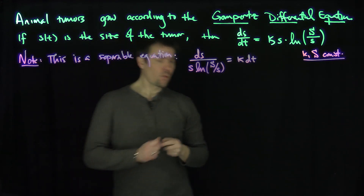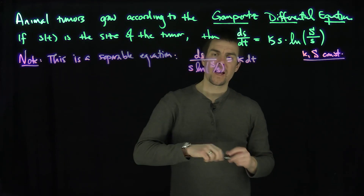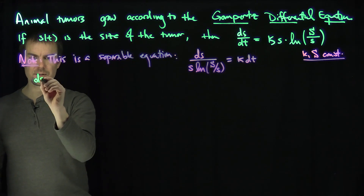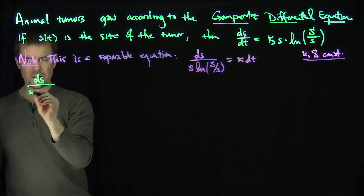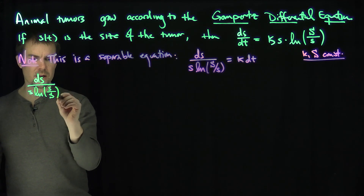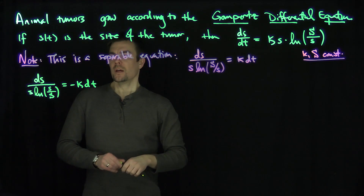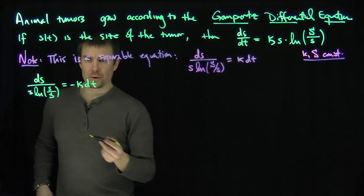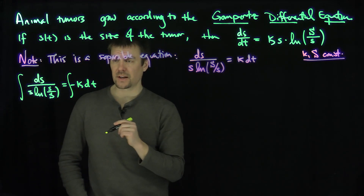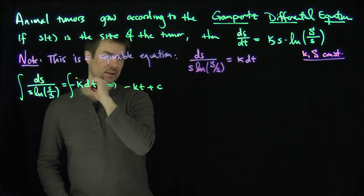Now I can take the s into the denominator of the logarithm and interchange it to a negative sign and flip the logarithm. So I'll write this as ds over s·ln(s/S), pulling out a negative, and put negative k dt on the other side. Now we can integrate both sides — the right-hand side is very easy, just negative k t plus a constant c.